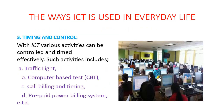The third way that ICT is used is in timing and control. With ICT, various activities can be controlled and timed effectively. Such activities include traffic lights. On the expressway where traffic lights are used to control traffic, it is timed so that when it asks one lane to move, it stops the other. In situations where it is not properly timed, it may ask two opposite lanes to move at the same time, thereby causing conflicts.